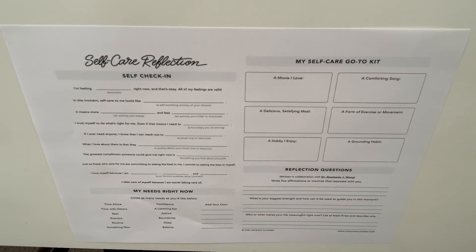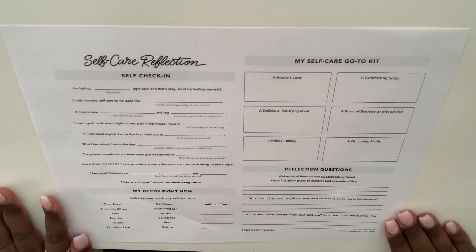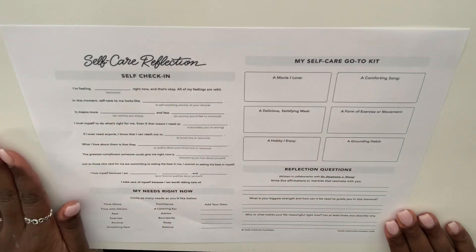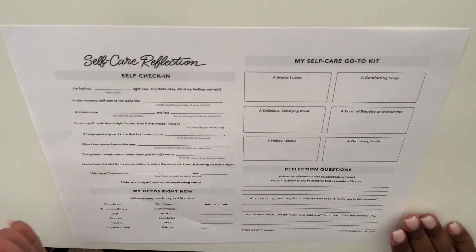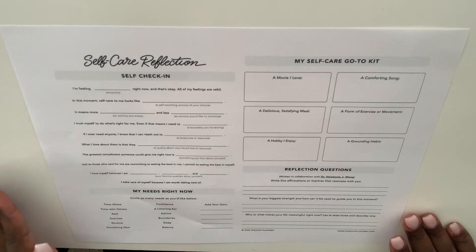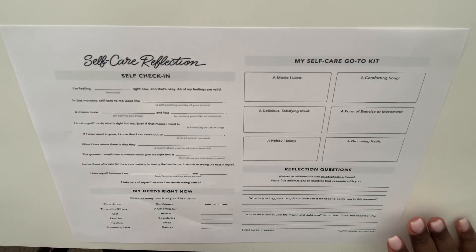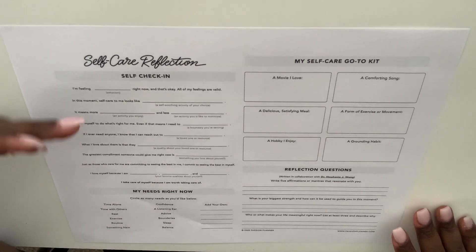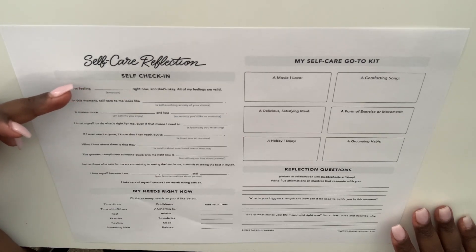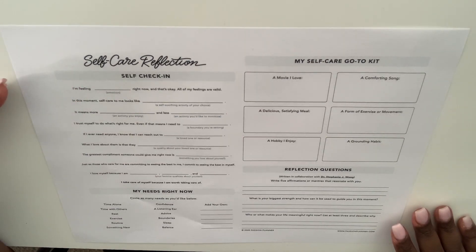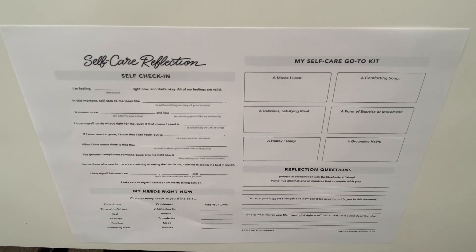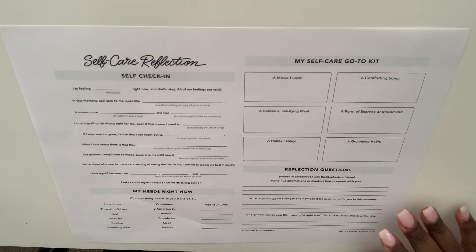This is the printout of the self-care reflection sheet in the small option. It is very small because they had to fit everything on this sheet, but let's go through it quickly. There's a self-check-in section right here — it says 'I am feeling' and they actually give you something almost like a Mad Lib. It tells you to put an emotion or put an activity, so that is super cool.